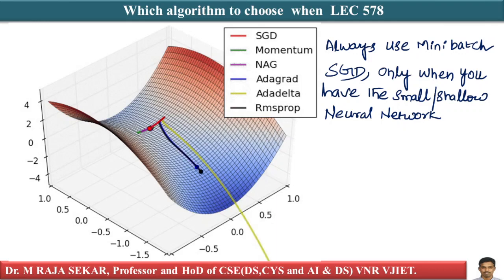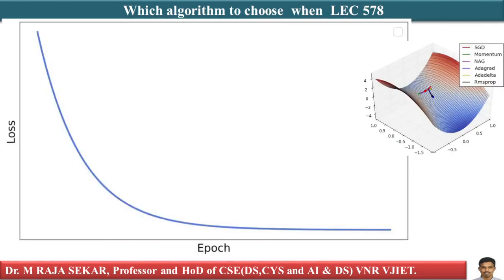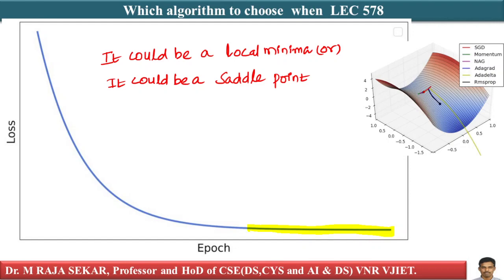How do you know that you are stuck at a saddle point? If with each epoch — with training loss on the y-axis — you are not changing much after some stage, you are stuck. This is not changing at all. One of the reasons could be local optima — there are two cases: it could be local minima, which is perfectly fine, or it could be a saddle point.